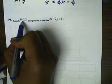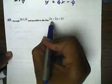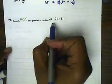For number 69, we want a point that goes through 0.5 and 5, and parallel to 2x minus 2y equals 11. So, once again, we're going to solve for y.